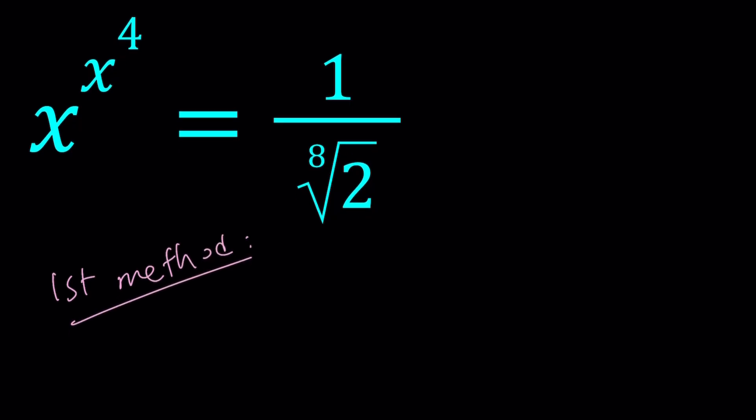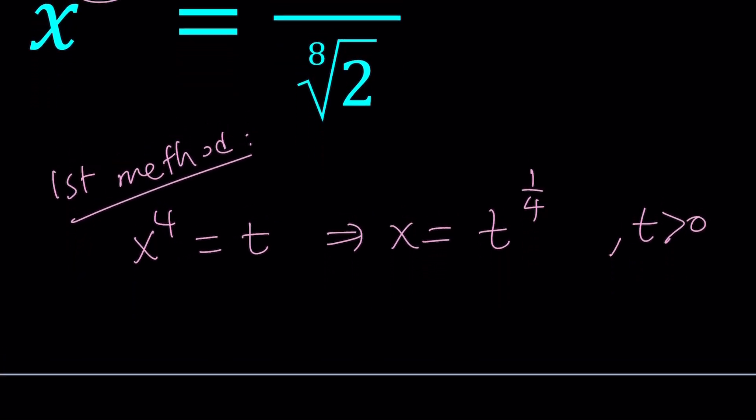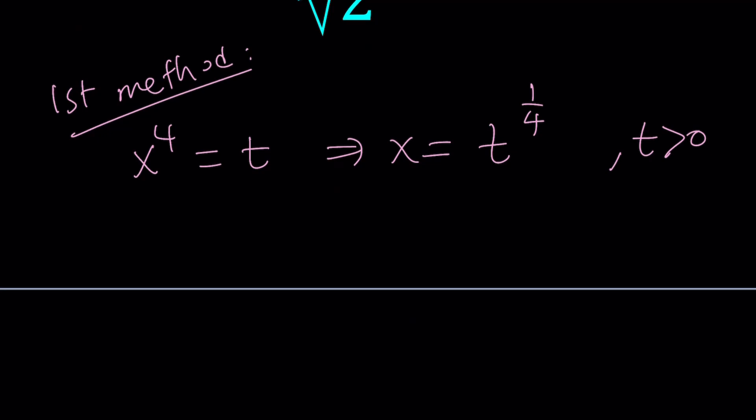I'm going to use substitution because substitution is so cool. I'm going to replace x to the fourth with a variable t. And then from here, x becomes t to the power 1 over 4. If you raise both sides to the power 1 fourth, you're going to get this. There's a couple things here. We want t to be positive obviously here, because it's the fourth power of a real number.